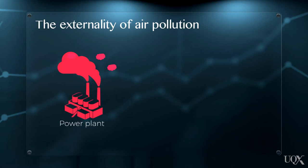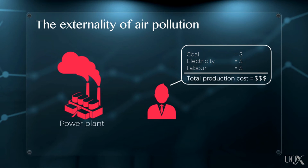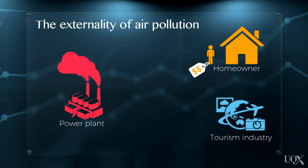The classic example of a negative externality is air pollution generated by industry. Most business enterprises make decisions based only on their direct cost of inputs and profit expectations. A power plant, for instance, may operate without factoring in the indirect costs caused by pollution, because the firm does not bear these costs. However, these costs, or externalities, are real for other people and organisations in the economy. For example, a homeowner living near the power plant may suffer higher health care costs, or the local tourism industry may lose revenue due to pollution from the plant causing environmental damage.